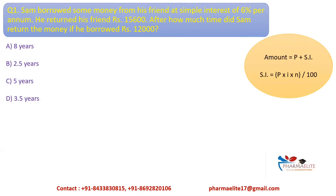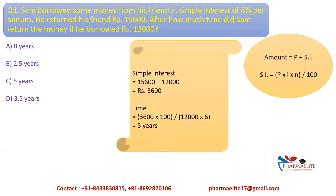Where SI is simple interest, P is the principal amount, I is the interest rate, and N is the term period. The principal amount is Rs. 12,000 and the amount returned is Rs. 15,600. The time can be calculated by rearranging the simple interest formula, and on solving we get time as 5 years. So after 5 years, Sam returned the money to his friend.